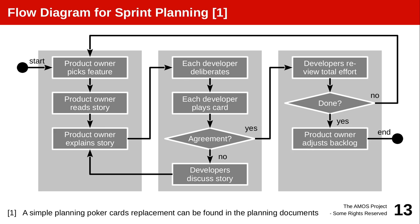So this is the measure — story points, unit-less — and they are used in planning poker: a simple process to get agreement on the size of a particular feature. This planning poker flow diagram here is the basic process where the product owner picks a feature, explains it to developers, they estimate the size and come to an agreement, and then they say this is the feature we are going to implement. It's a so-called Delphi method of experts, who think by themselves and then have a discussion to learn from each other, and then they think by themselves again, and so forth.